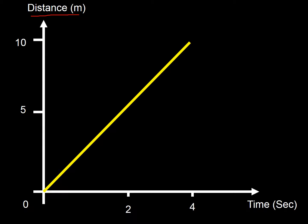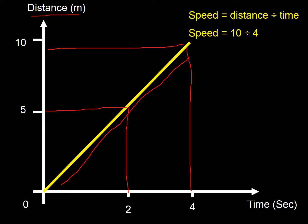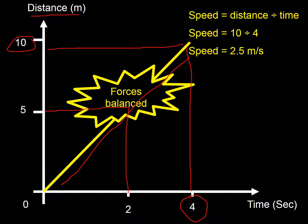Still a distance-time graph, but now we've got a different shape — it's going up and up. After two seconds it's 5 meters away; after four seconds it's 10 meters away. We can work out the speed: it's a constant velocity. Speed equals distance divided by time, so 10 divided by 4 gives us 2.5 meters per second. The forces must be balanced — the forwards force equals the drag force.